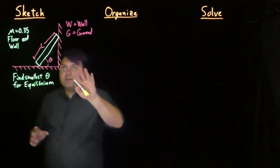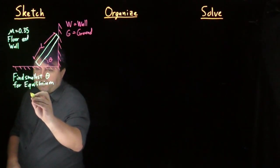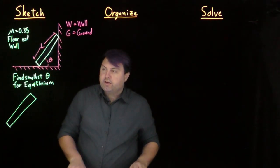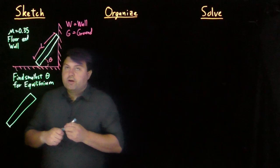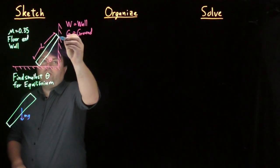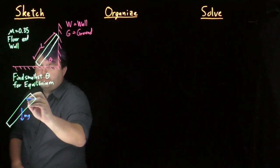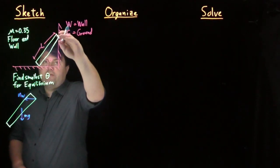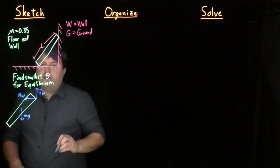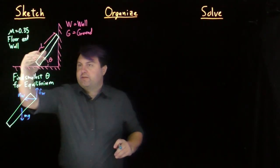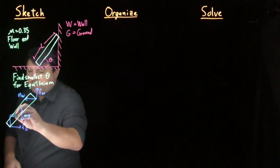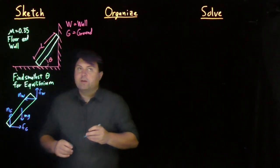We've done a good sketch and now we want to get our extended free body diagram. We draw our ladder and the forces on our object. At the center we have gravity. From the wall, perpendicular to the wall, is the normal force from the wall. The ladder is going to try to move down, so we have friction from the wall pointing up. Down at the base, if it moves down it moves out, so friction from the ground points inward, and the normal force from the ground points up.